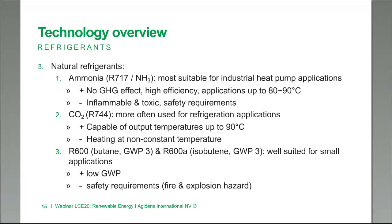Looking at the different kinds of refrigerants, we have natural ones like ammonia, R717 or NH3. This is the type of refrigerant most suitable for industrial heat pump applications. The positive points are the lack of greenhouse gas effect, high efficiency, and the fact that ammonia supports applications up to 80 or even 90 degrees centigrade. The disadvantage is that it's flammable and toxic, so you will face certain safety requirements. However, ammonia stinks terribly, so if there is a leak, you tend to know it very quickly and can evacuate before it actually hurts you.